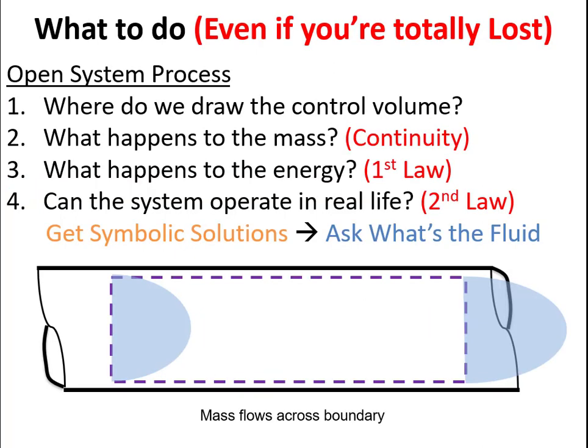So what do we do for cycle problems? Even if we don't know what we're doing, we'll draw a control volume around each component in our system. We'll do conservation of mass. Then we'll see what happens to the energy. So a first law analysis. And if we're designing something, we might want to see if the system can actually happen in real life. So we'd look at a second law analysis.